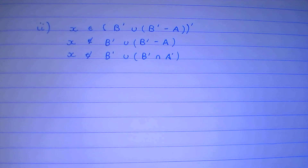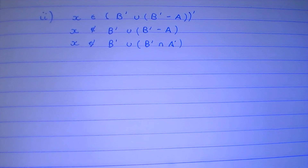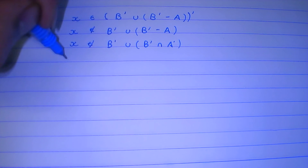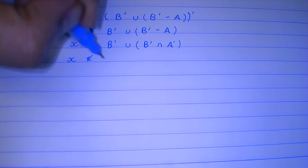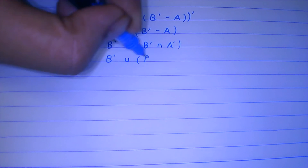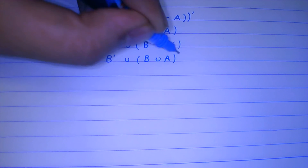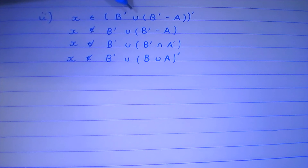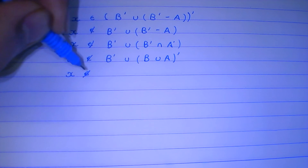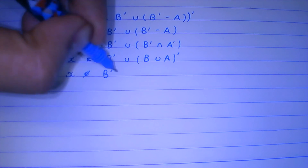That's the definition of symmetric difference. Moving further, this means that x does not belong to B' union (B ∪ A)', by De Morgan's law — you should remember it, it's very important. Which means x does not belong to B'.